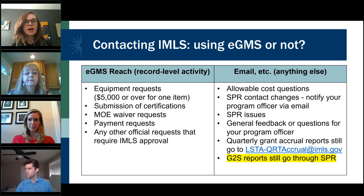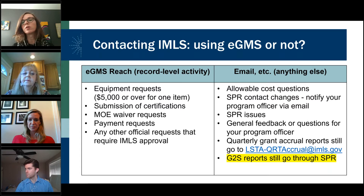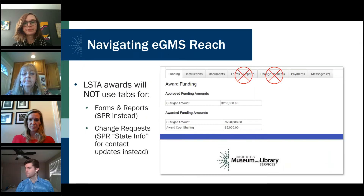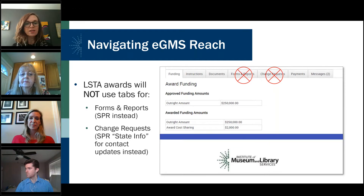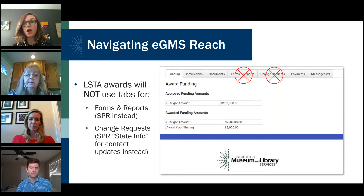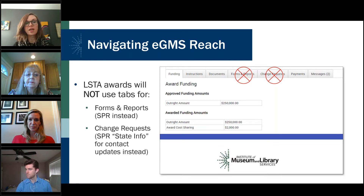This slide is a great one to keep for your records as a guideline on what to send in eGMS and what to send as an email. For quarterly grant accrual reports, you'll always want to submit them through email to the quarterly grant accrual email address. Due to the nature of LSTA allotment awards, we generally will not use the forms and reports tab in eGMS Reach. If you go to that tab, it will display your reporting schedule — but again, submit in the SPR. We are also not using the change requests tab for LSTA awards.